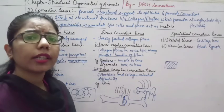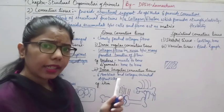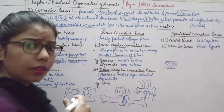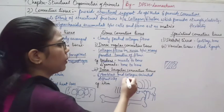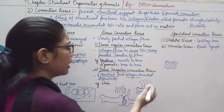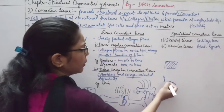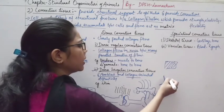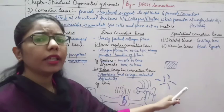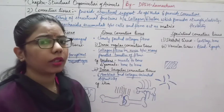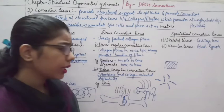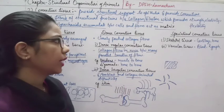Dense irregular connective tissue has cells and fibers arranged in a scattered, non-uniform manner with no proper direction or pattern. Fibroblasts and collagen are present but arranged differentially. This type of tissue is found in the skin.